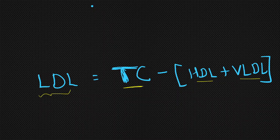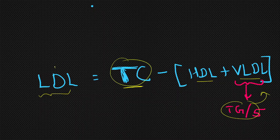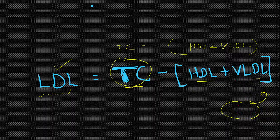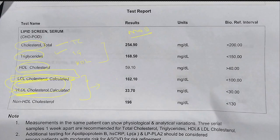So how to calculate LDL? Low density lipoprotein equals total cholesterol minus HDL minus VLDL. A simple understanding of VLDL is that it equals one-fifth of triglycerides — that is, triglyceride divided by five gives you VLDL. So LDL equals total cholesterol minus HDL minus VLDL. Looking at this report: LDL is 162, total cholesterol is 254 — once you subtract 59 and 33 from 254, you get 162. That is why LDL and VLDL are marked as 'calculated.'